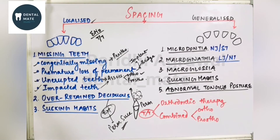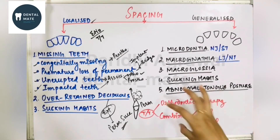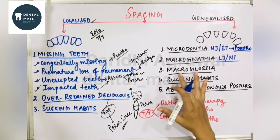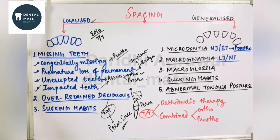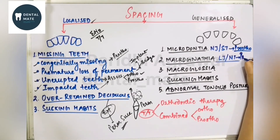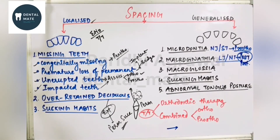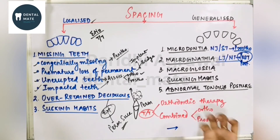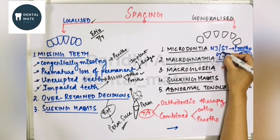For microdontia, the treatment is crown build-up — jacket crowns or composite build-up can be given (prosthodontic treatment). For macrognathia, the best method is protraction of the posterior teeth — bring the posterior teeth forward and then close the spacing, as there is less chance of relapse. Alternatively, jacket crowns and composite build-ups can be done, but the tooth might look excessively large. So for macrognathia, orthodontic treatment is the primary approach.